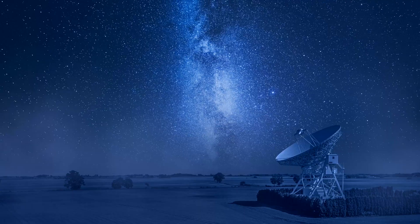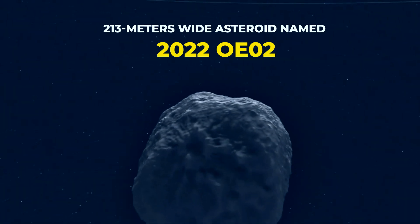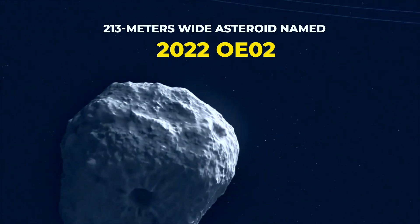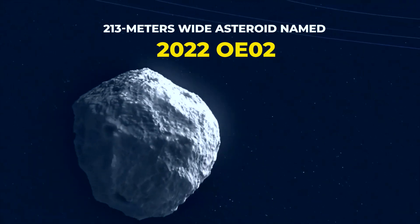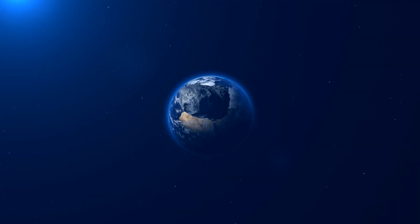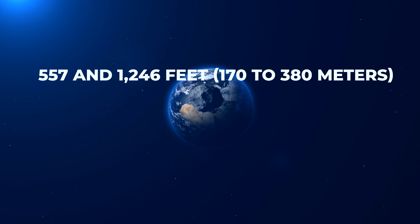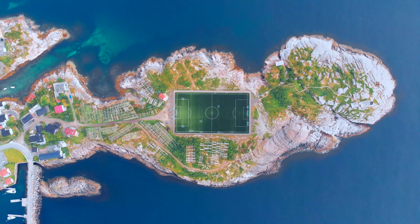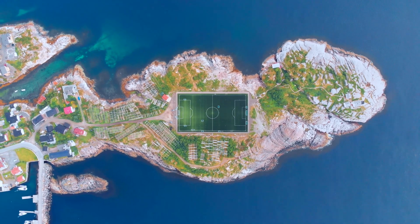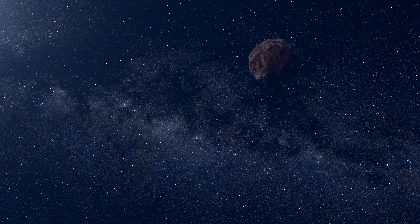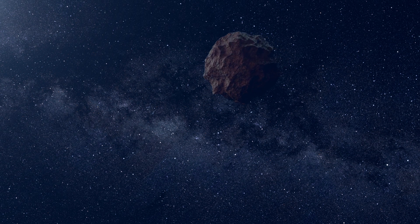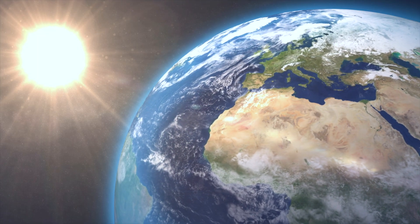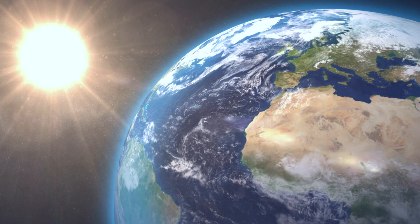NASA astronomers discovered the asteroid known as 2022 OE-02 just days ago, on July 26. The massive space rock is estimated to measure between 170 to 380 meters wide, which is about twice as wide as an American football field is long. Astronomers also confirmed that 2022 OE-02 is an Apollo-class asteroid, which means it orbits the sun and crosses the path of Earth's orbit.